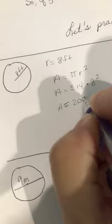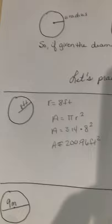It's 200.96 and it's feet squared because you're talking about the area inside. And remember when we talked about it earlier, those are those little boxes inside it.